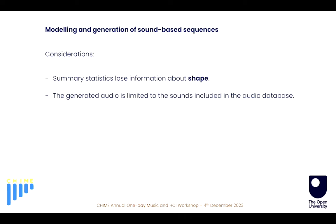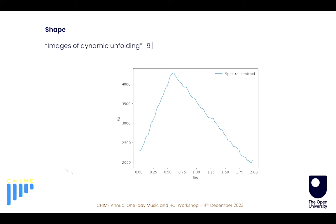The question is: how can we use the information about shape to expand the audio database we can use to generate sounds? Shapes can be, as defined in literature, images of dynamic unfolding — we can associate them with profiles, contours, or gestures. As an example, we can listen to this very simple sample, which is a filtered white noise with a bandpass filter. If we extract the spectral centroid from this sample, we will see a shape which can be the gesture that the musician used to play this sample.